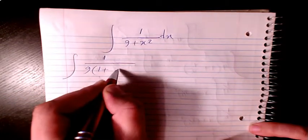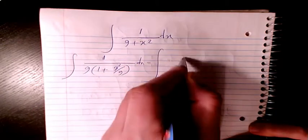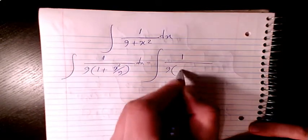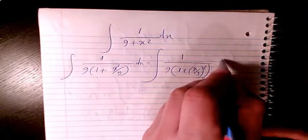It will be 1 plus x squared divided by 9 dx. That will be the same as 1 over 9, 1 plus x divided by 3 squared dx.